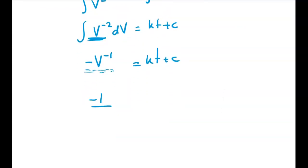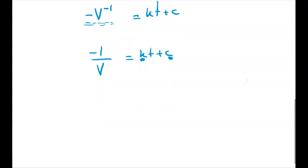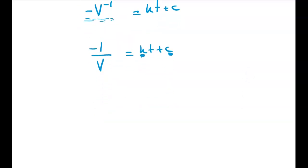So this is equal to KT plus C. Writing that out without the negative power I get negative 1 over V is equal to KT plus C. Okay now I'm going to substitute in the two things that we know. I've got two constants that I have to work out and I've got two pieces of information. So we should be okay from here.